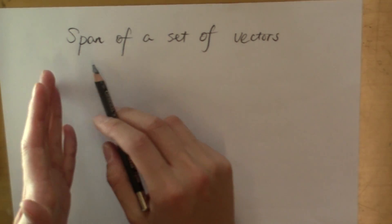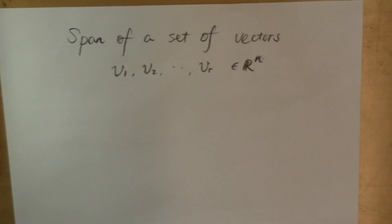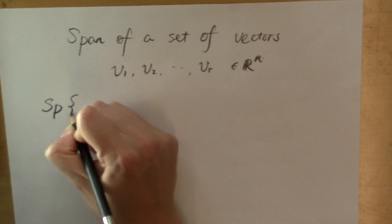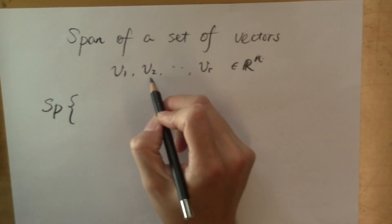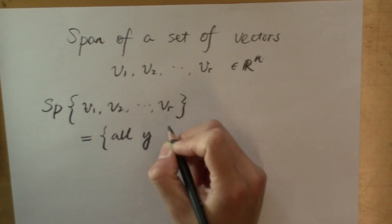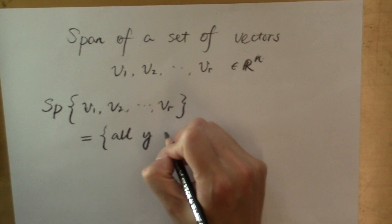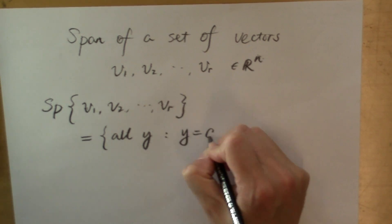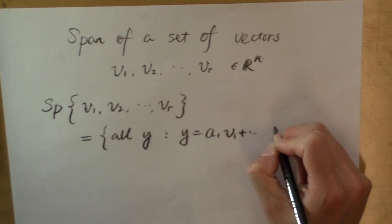Let's talk a bit more about the span of a set of vectors. Like we mentioned in the last video, the span of a set of vectors v1, v2 to vr is the set of all possible linear combinations. So, all the vectors y, so that y is equal to a linear combination of these vectors.